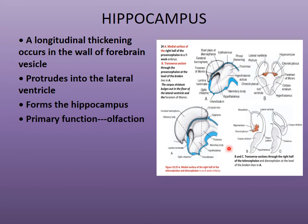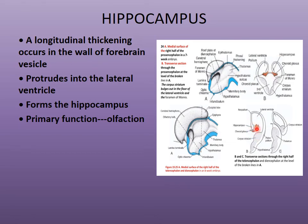As the medial walls come into close approximation, the medial hemispheres thicken and form a longitudinal thickening of the forebrain vesicle that protrudes into the lateral ventricle. This part forms the hippocampus, whose primary function is olfaction.